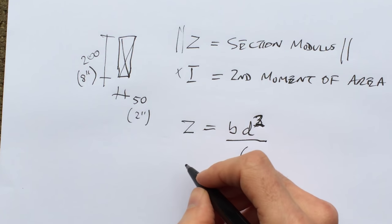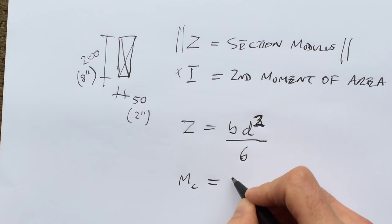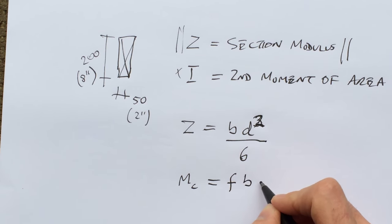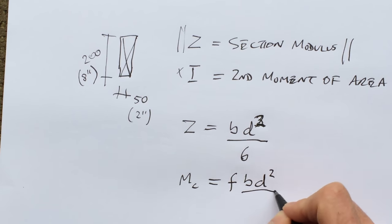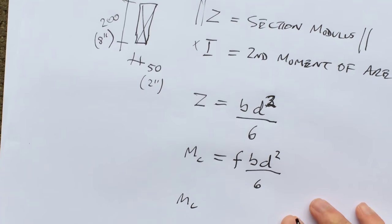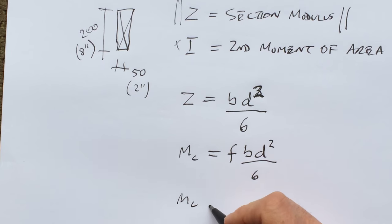And if we want to find out the moment capacity for a beam, it's the allowable stress times the section modulus. So that's the formula we come to. Let's work that out. Moment capacity equals the allowable stress for...